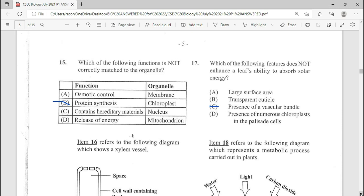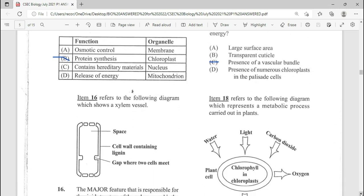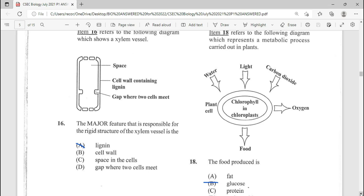Number 17, which of the following feature does not enhance the leaf ability to absorb solar energy? And of course, this is going to be C. Please read.